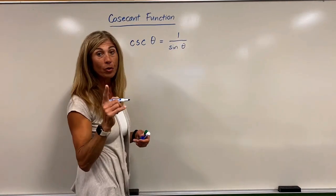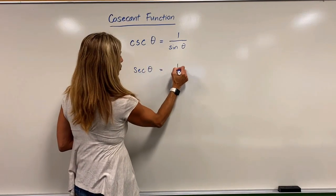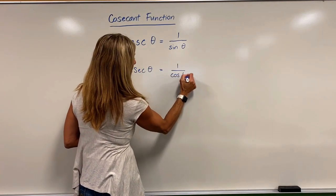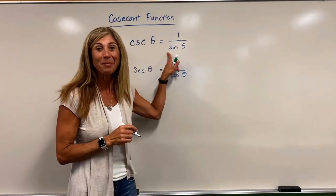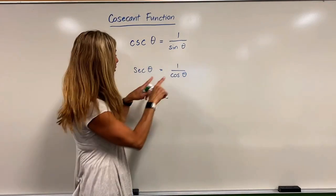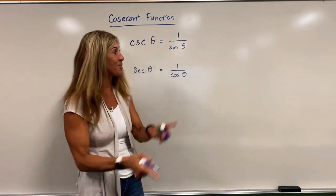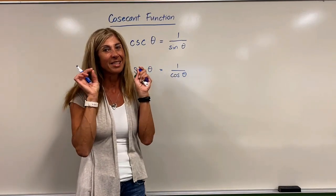Recall, we've already looked at our secant of theta, which was the reciprocal of cosine theta. Note that sine does begin with s, but its reciprocal begins with c, and cosine begins with c, and its reciprocal begins with an s. Just note that because it is a common error.